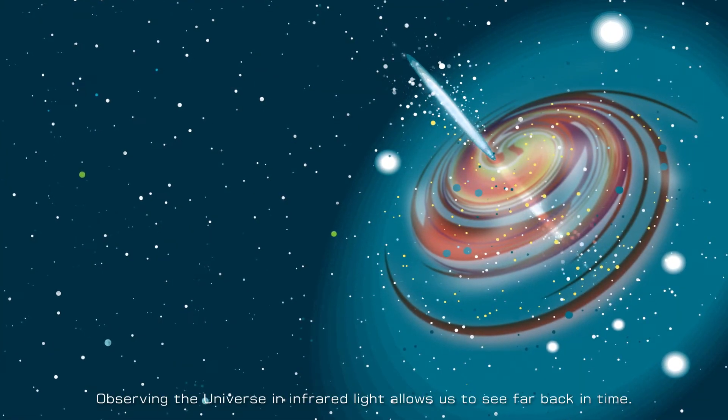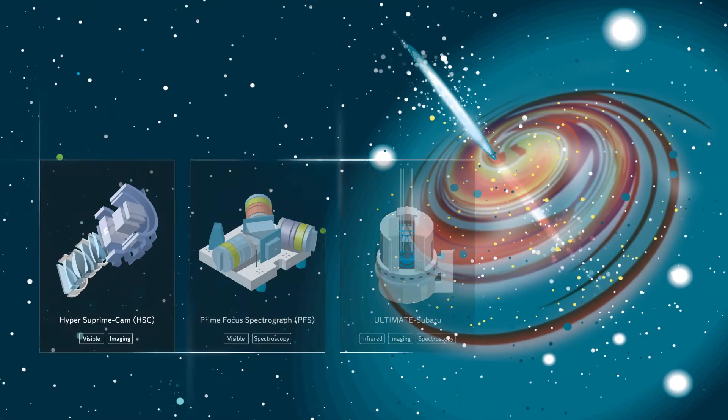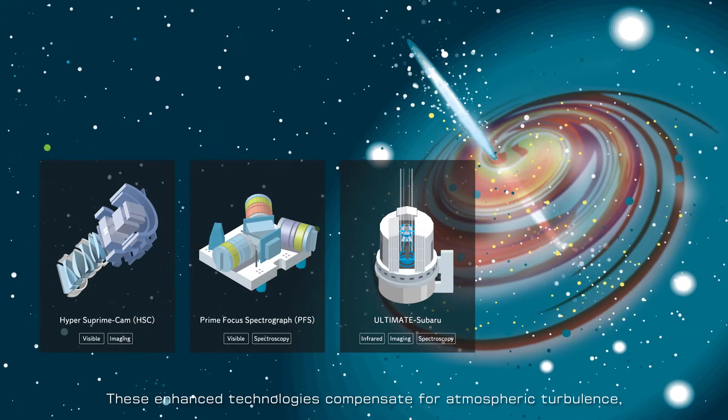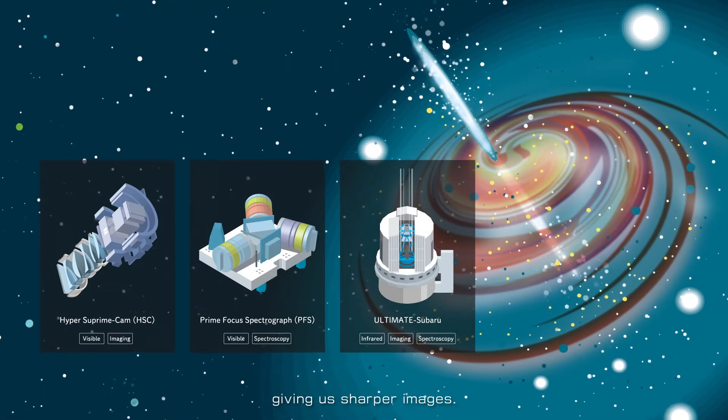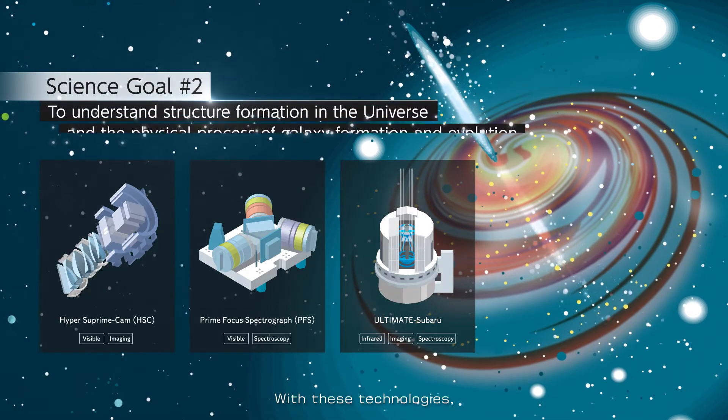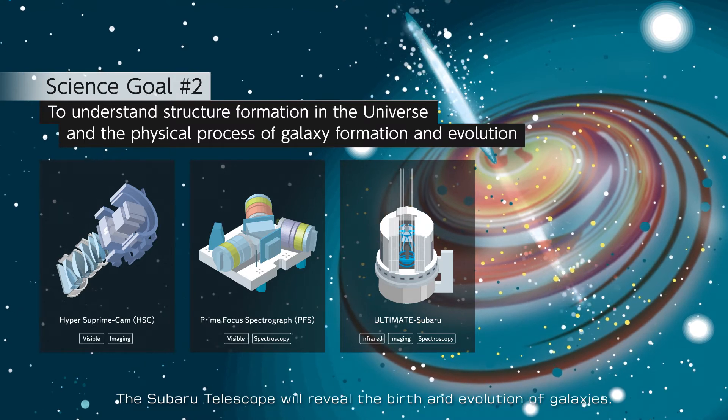Observing the universe in infrared light allows us to see far back in time. These enhanced technologies compensate for atmospheric turbulence, giving us sharper images. With these technologies, the Subaru Telescope will reveal the birth and evolution of galaxies.